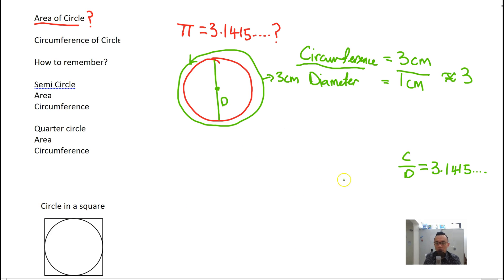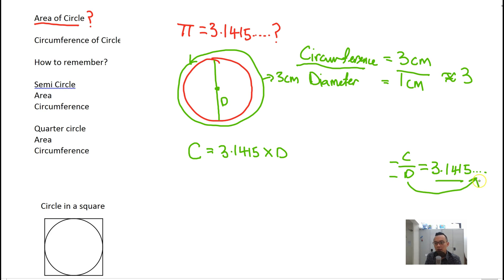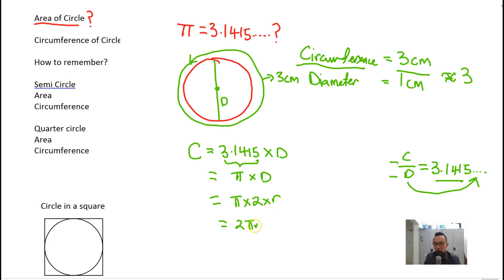So now, since circumference divided by diameter equals pi, if we want to find the circumference, we take pi times the diameter. So the circumference equals pi times D, which is the diameter. Or, since the diameter equals 2 times the radius, we can also write it as 2 pi r.